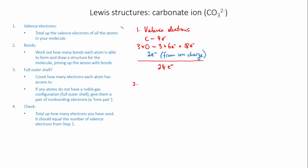Next, look at bonds: carbon likes to form four bonds and oxygen likes to form two. Since carbon forms the most bonds I'll put it in the middle. Starting with single bonds to the three oxygens — that gives carbon only three bonds, but it needs four, so I'll make one of them a double bond. Now carbon has four bonds and the oxygen at the top has two bonds. The other two oxygens only have one bond each, but we can solve this with non-bonding electrons — a situation that arises mostly when drawing ions.